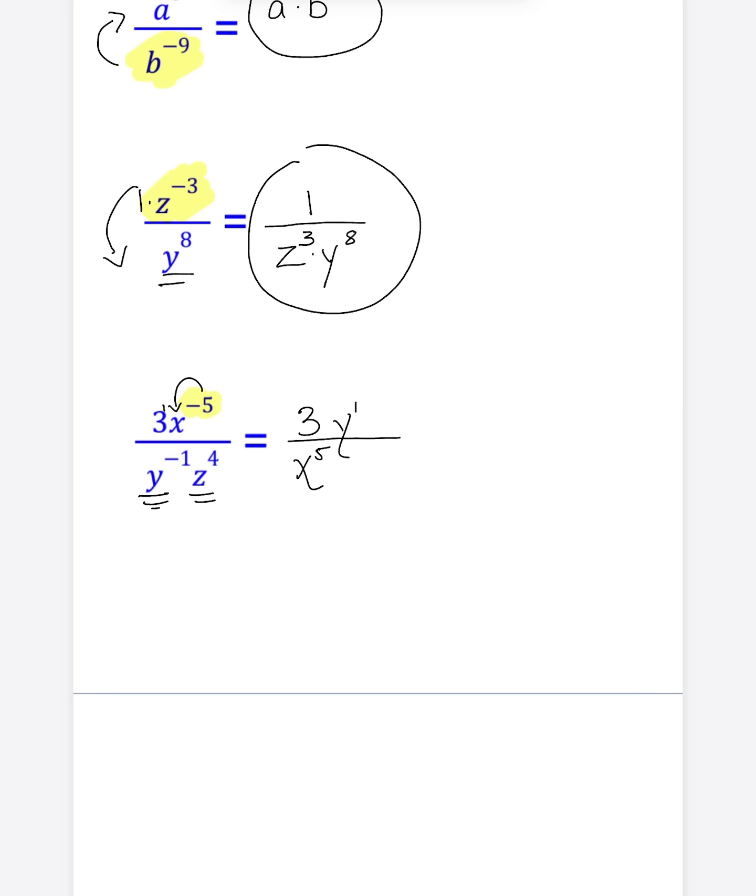This Z does not have a negative exponent. So what do we do? Nothing. We leave it right where it was, where it's now being multiplied by that X to the fifth in the denominator. Now for this one, the only thing I would do to make it a little simpler is let's go ahead and get rid of this exponent of one, because Y to the first is the same thing as Y. And we're done with this one.